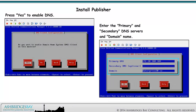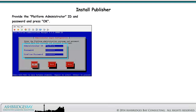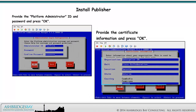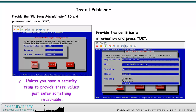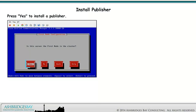Press Yes to enable DNS. Enter the primary and secondary DNS servers and domain name. For Enterprise 20, we have only one DNS server at 172.20.100.101 with the domain enterprise20.ca. Press OK. Provide the platform administrator ID and password and press OK. The platform administrator has access to the console and the OS administration and disaster recovery web pages. Provide the certificate information and press OK — unless you have a security team to provide these values, just enter something reasonable. Press Yes to install a publisher.